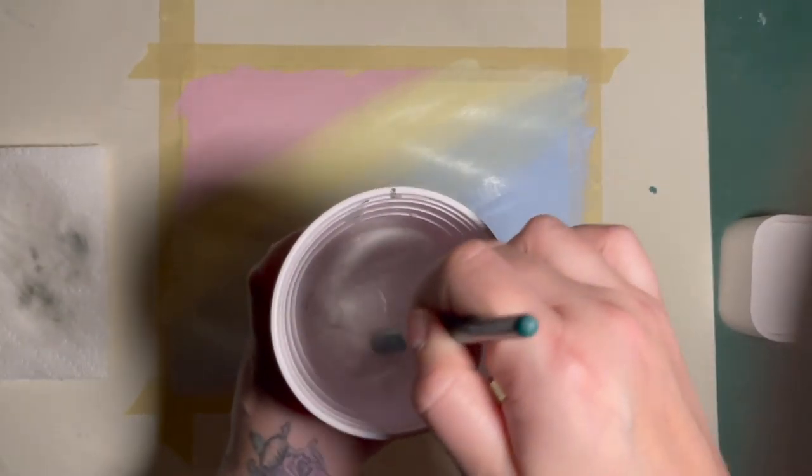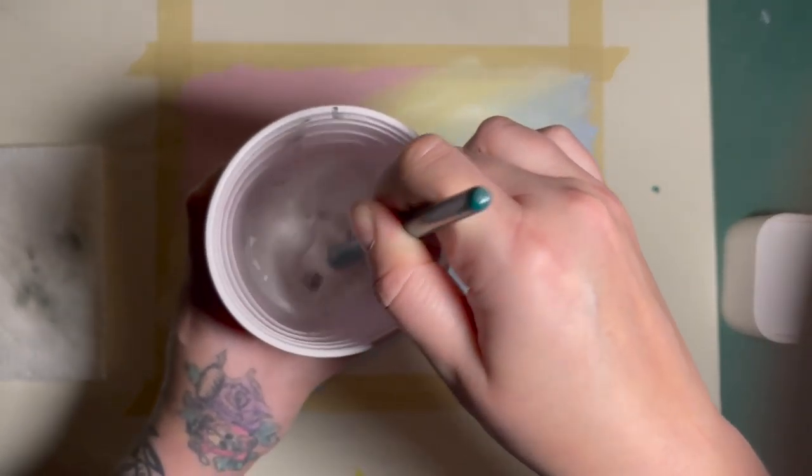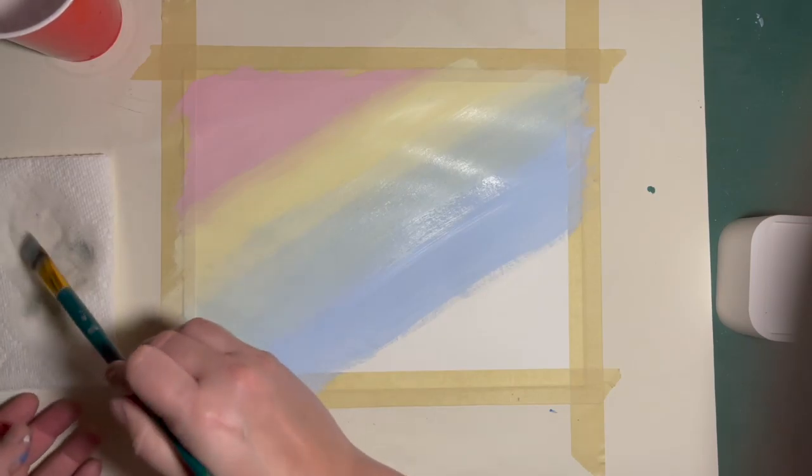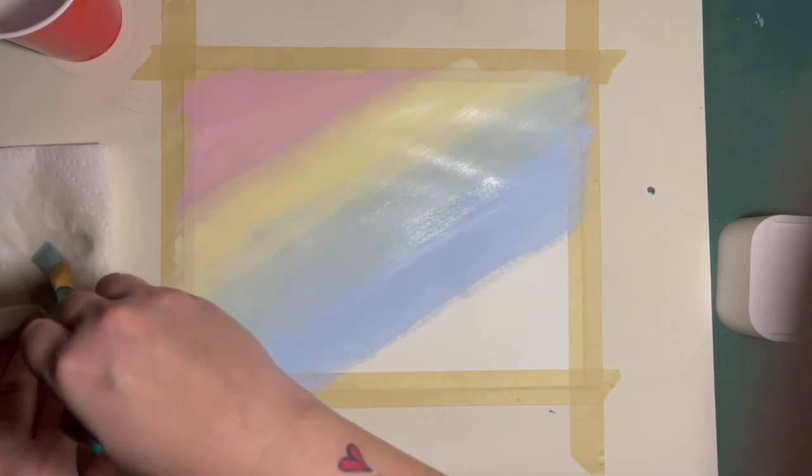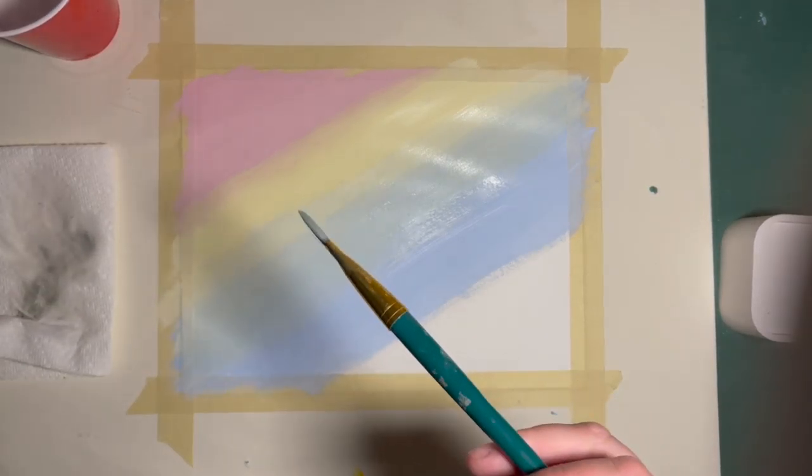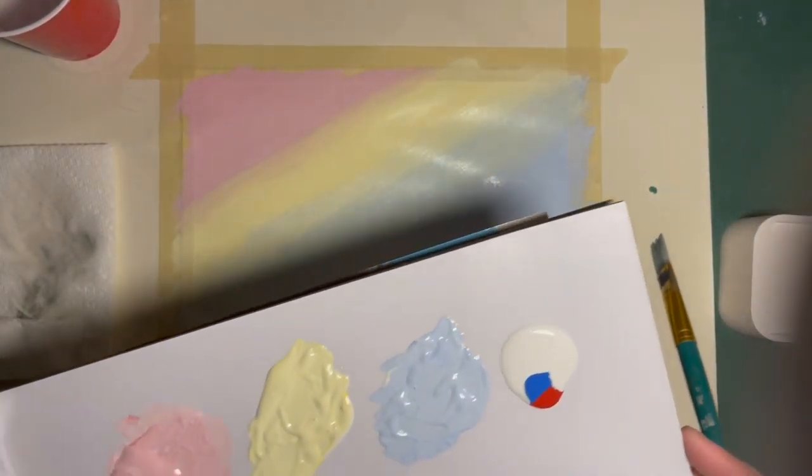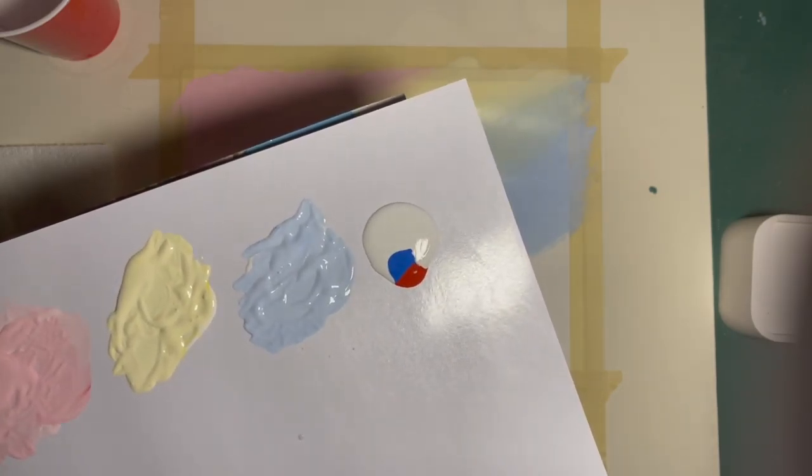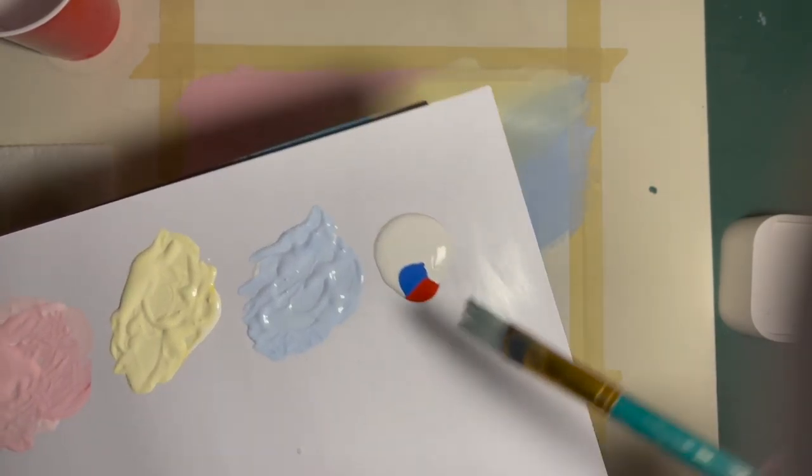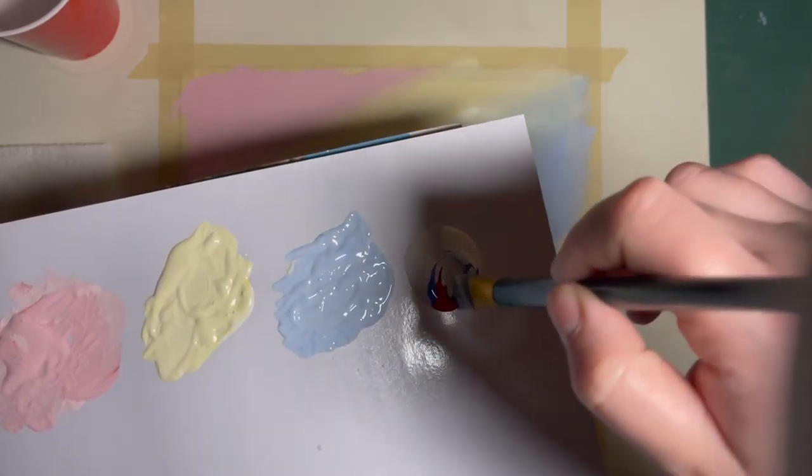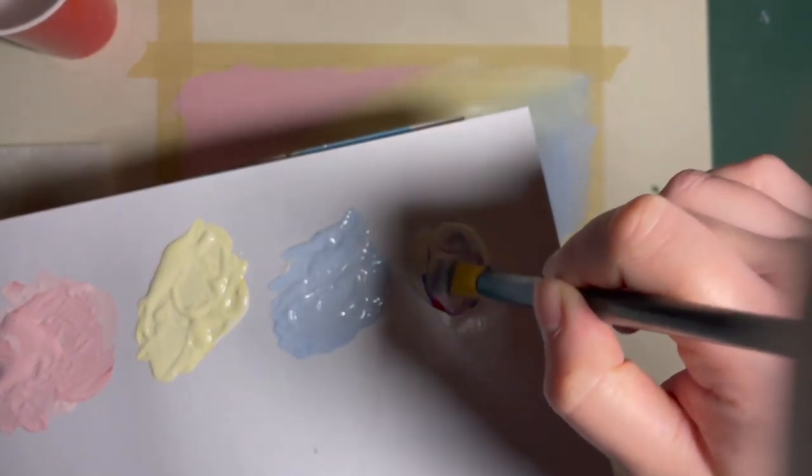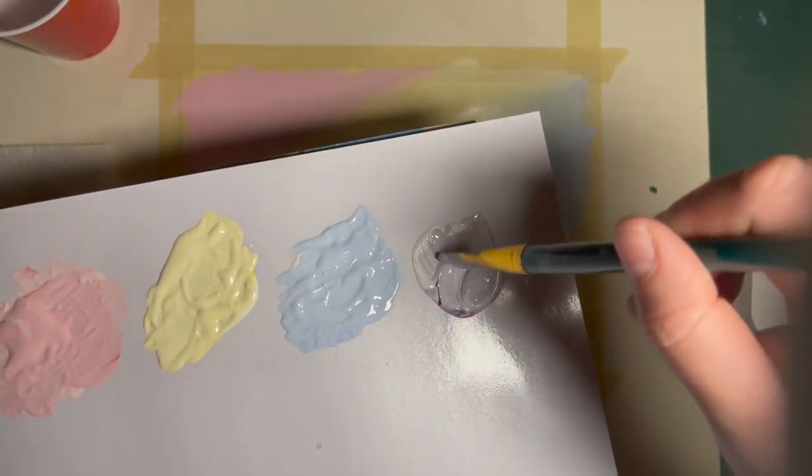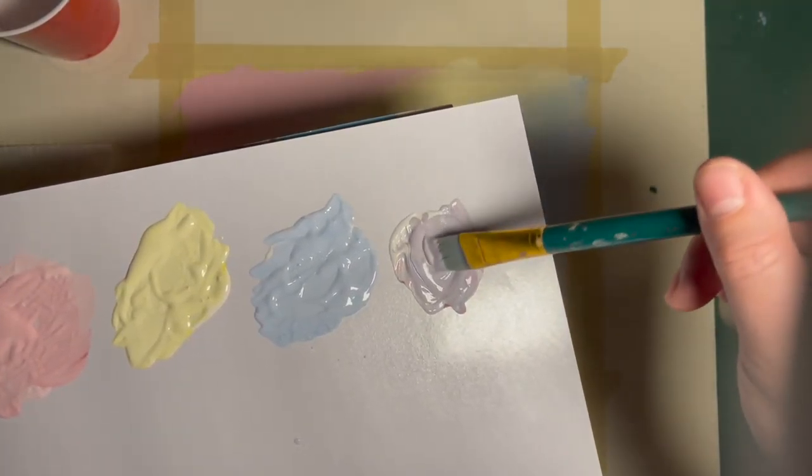Now again, rinse your brush really well. Rinse, rinse, rinse. And you're going to dry it on your paper towel. And we're going to go into our last color. So careful not to smush your painting. I'm going to hold the palette up so I don't do that. Now purple is going to be a big blob of white, a tiny drop of blue and a tiny drop of red. And once you mix that all together, you're going to have a nice violet color.